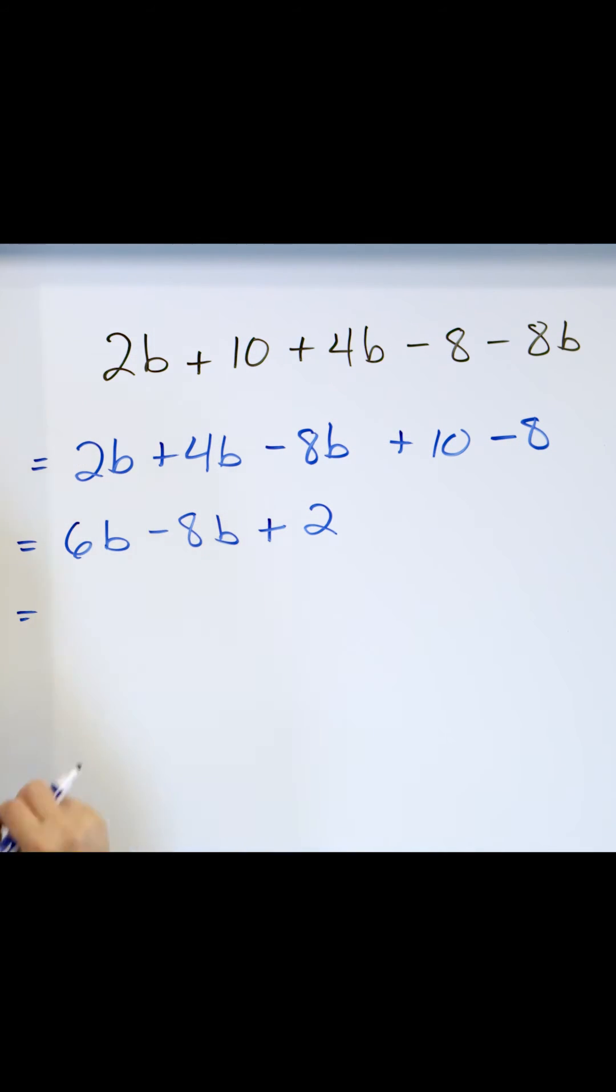6 minus 8—what do you get when you have 6 minus 8? You have negative 2. Basically, you subtract, and the sign goes with the larger absolute value. But there has to be a b there, because these are like terms, plus 2. Negative 2b plus 2, and that's the final answer.